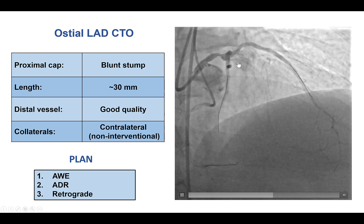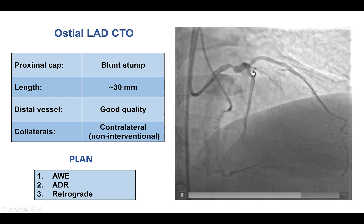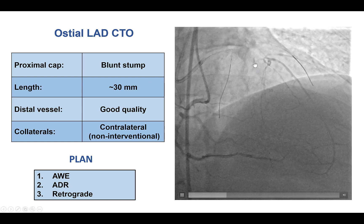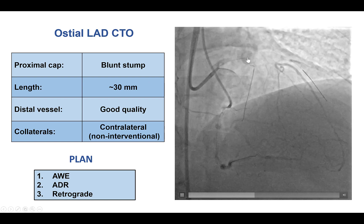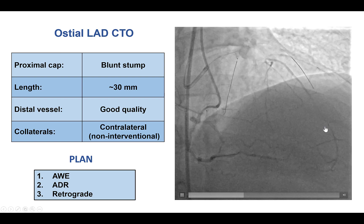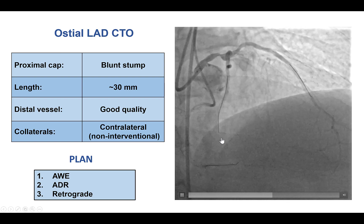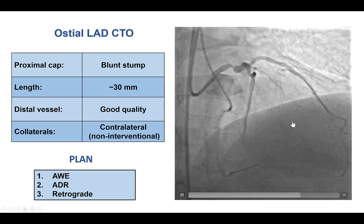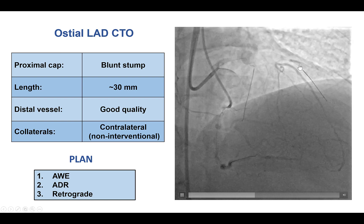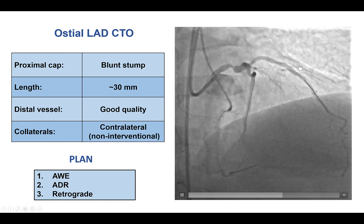He did have a proximal LAD CTO. The proximal cap was ambiguous. The length was about 30 millimeters. There was a good quality distal vessel that was filling by contralateral non-interventional collaterals, and there was a diagonal at the distal cap.